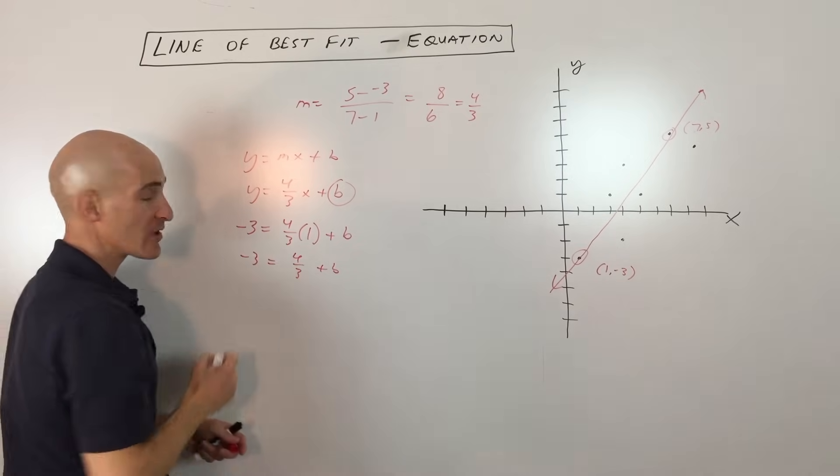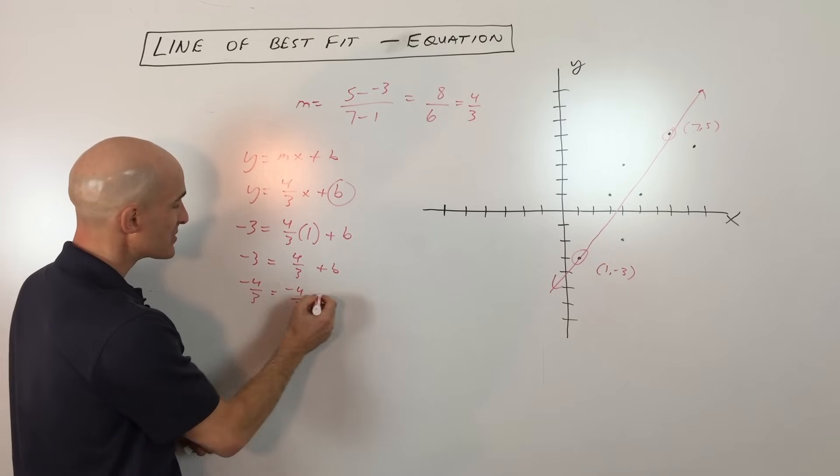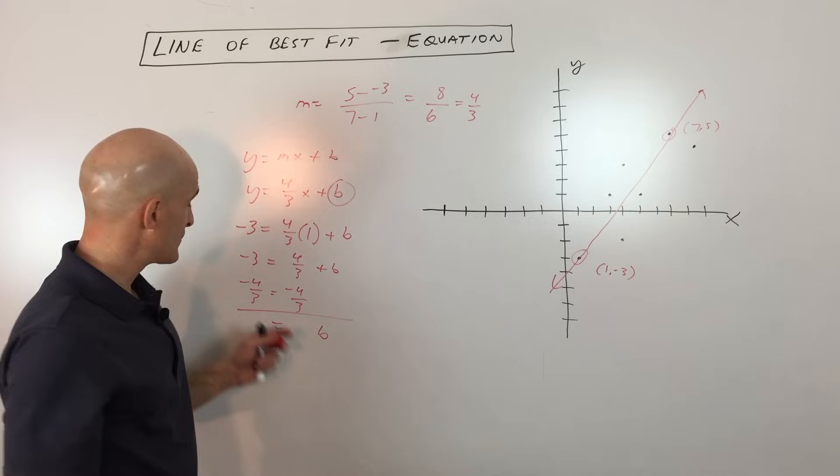plus b equals negative three and I'm going to subtract the four thirds from both sides, so minus four thirds minus four thirds and that gives us b.